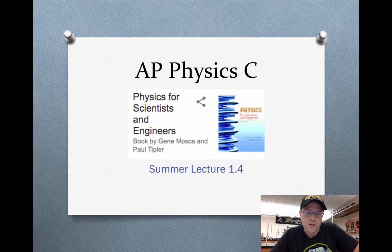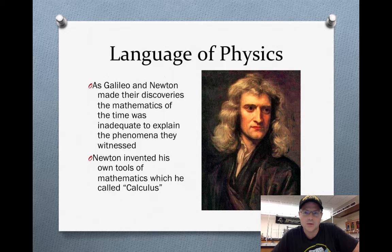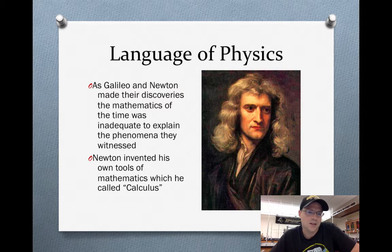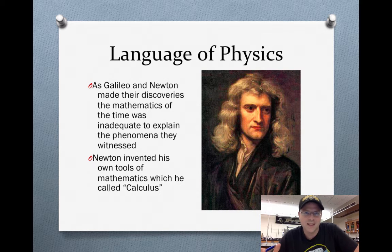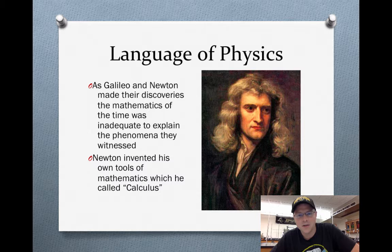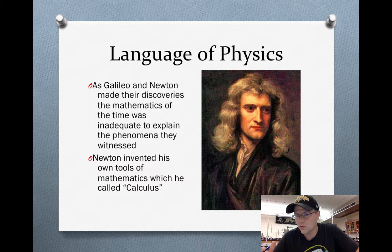This is the fourth lecture in the summer assignment. We need to get into the language of physics. When Newton and Galileo were making their discoveries, the math at the time was not equipped to handle what they were seeing. So Newton and Leibniz both at the same time were inventing calculus — they both argued over who actually invented it — but calculus is the language of physics. It's the way we understand it; it makes our graphs and equations make sense.